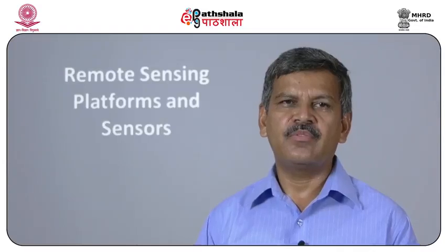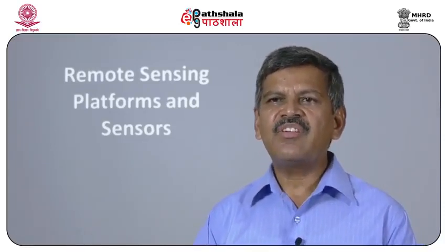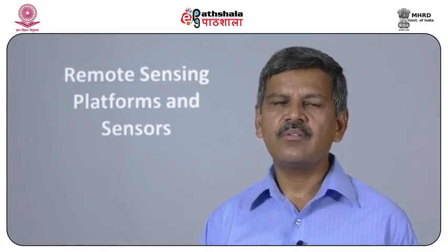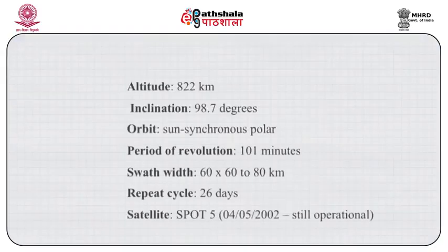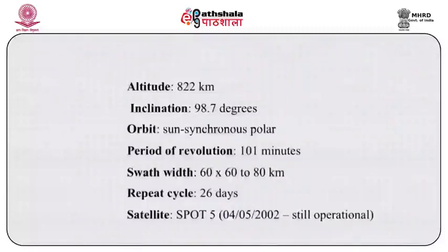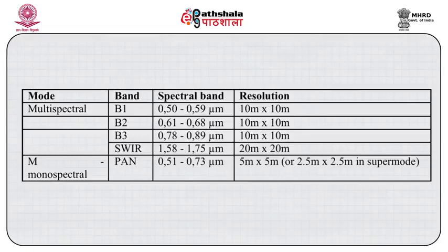Come to SPOT-5. It has sensors including a high-resolution geometric sensor, high-resolution stereoscopic sensor, and vegetation sensor. The altitude is 822 km. Orbit is sun-synchronous. Period of revolution is 101 minutes. Swath is 60 × 60 to 80 km. Repeat cycle is 26 days. The HRG sensor has MSS bands B1, B2, B3 at 10 × 10 meter spatial resolution, SWIR at 20 × 20 meters, and PAN at 5 × 5 meters.